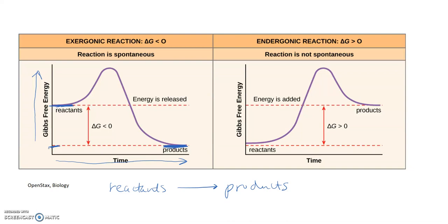We know that energy can't be created or destroyed, therefore that energy is going somewhere. In this case, energy is going to be released in the cell. That's important in biology because that energy can be used for the cell to do work. An exergonic reaction can be coupled with another reaction that requires energy to drive that reaction forward.